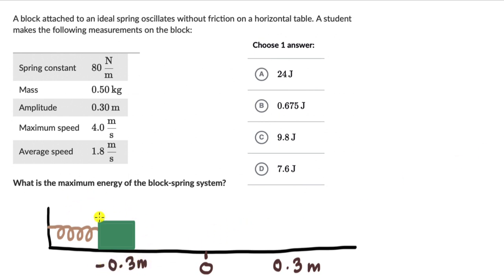Alright, what else do we know? We know the spring constant. We know the constant of this spring. This is 80 newtons per meters and we also know the maximum speed 4 meters per second and the mass of the block which is 0.5.